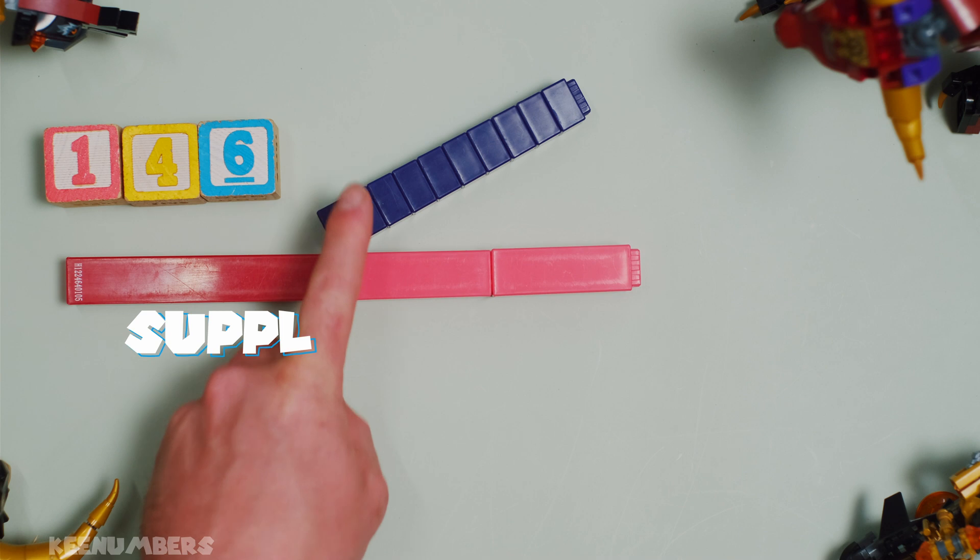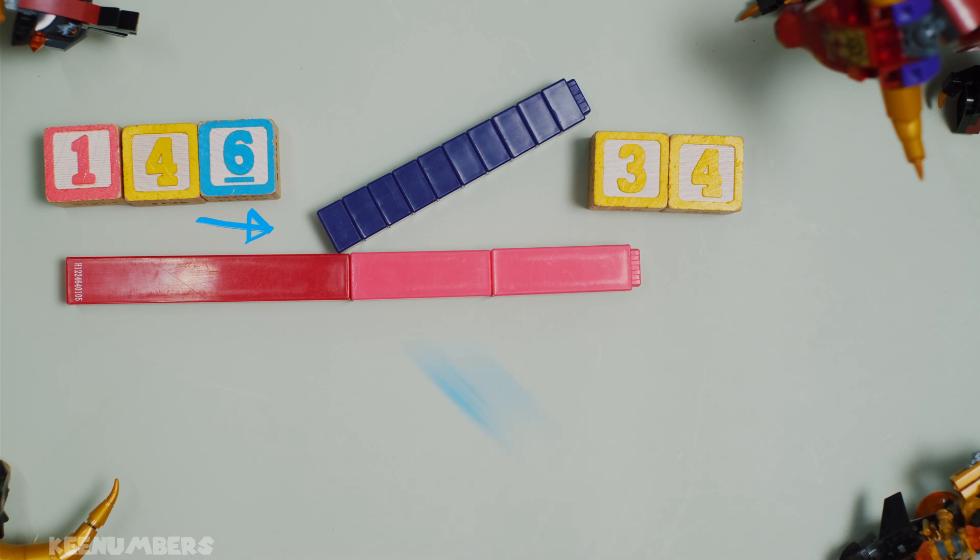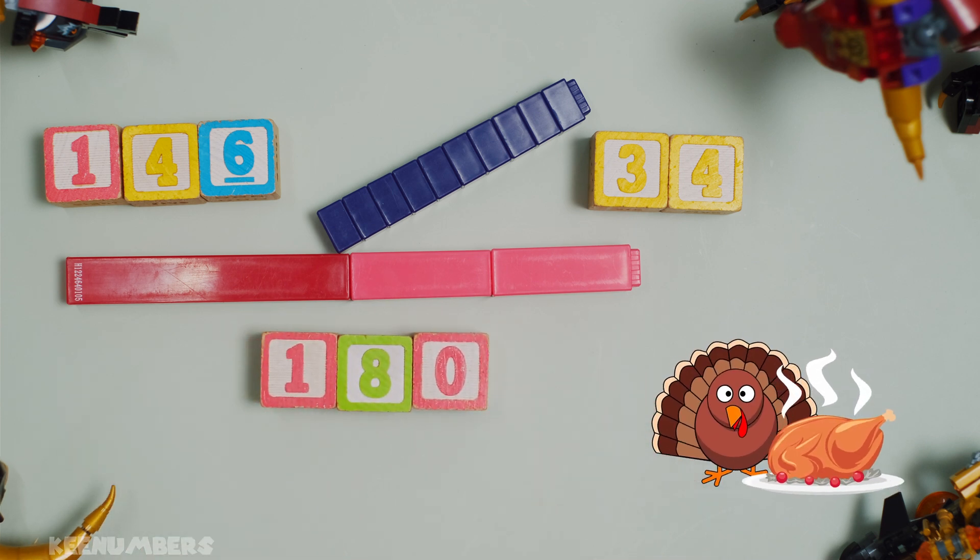That's going to be your obtuse angle here, or supplementary angle to the original number that we started with, 34. 146 plus 34, yep. When you add those turkeys together, you're going to get 180 degrees.